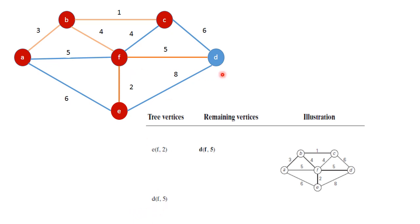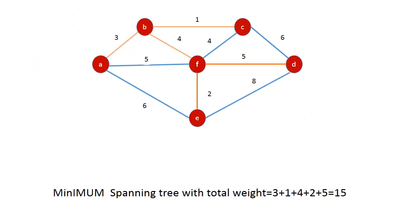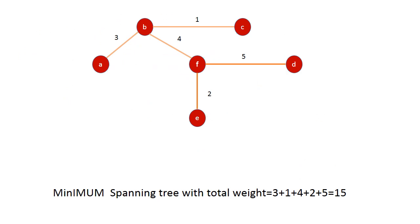Finally, our minimum spanning tree contains these edges: A-to-B, B-to-C, B-to-F, F-to-E, and F-to-D. The total cost is 3 plus 1 plus 4 plus 2 plus 5, which equals 15.